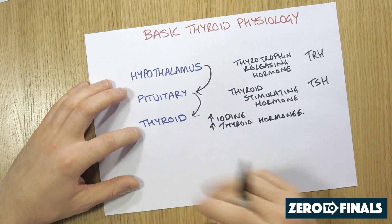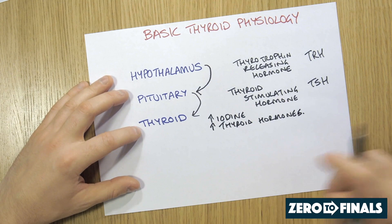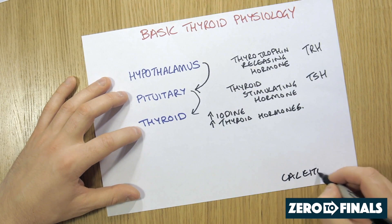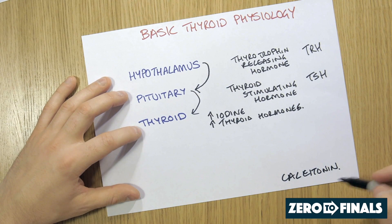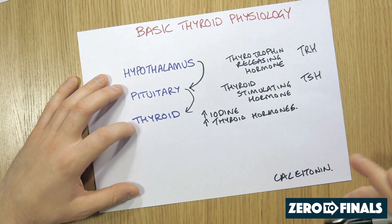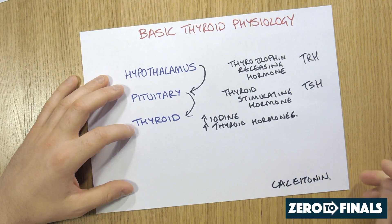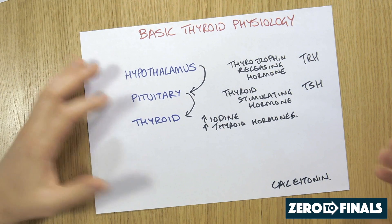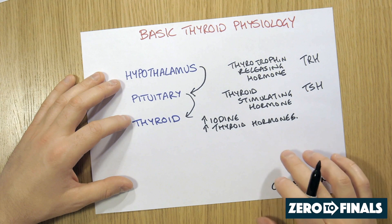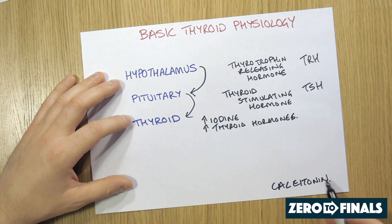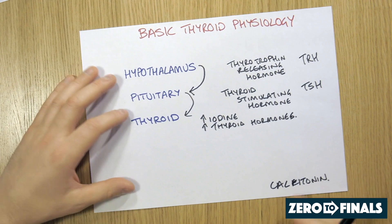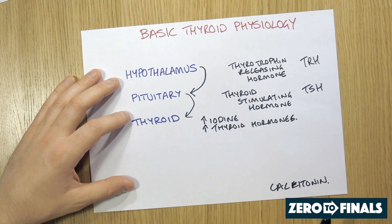The thyroid gland, just for the sake of completeness, also produces something called calcitonin. Calcitonin is important for the regulation of calcium in the blood and the deposition of calcium into the bones. But for the sake of this video, I'm just going to ignore that — that will be covered in a separate video.